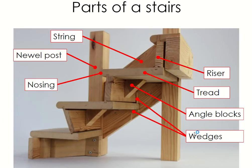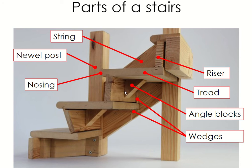Moving on — this is a model that somebody would have made for their Leaving Cert construction study of the stairs; it's a very good model showing the different parts. You have the string which is the side part on the far side, the risers, the tread, and a few bits we haven't looked at yet. There's a wedge that keeps the steps from falling down, and an angle block that joins the step and the riser together as a support. You also have the newel post and a nosing — the nosing is just the rounded corner of the steps, which looks nicer if it's rounded.